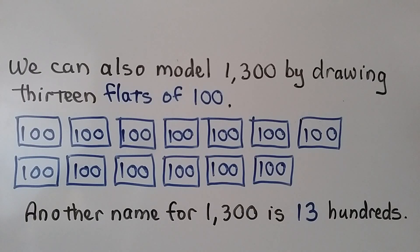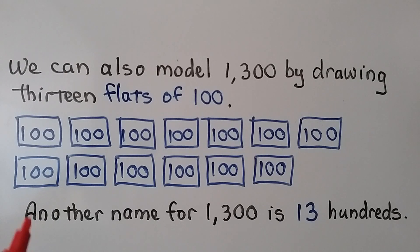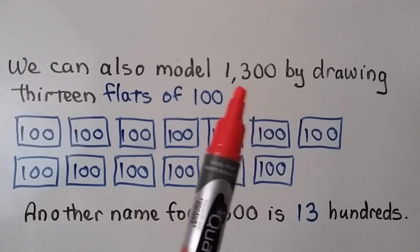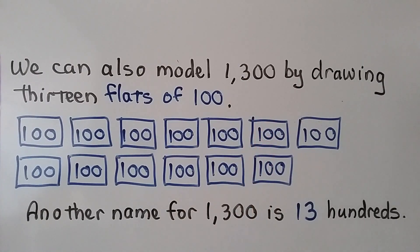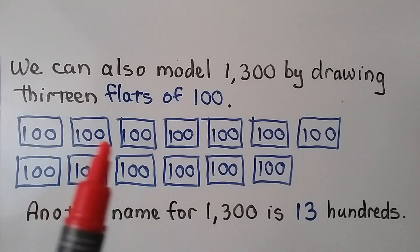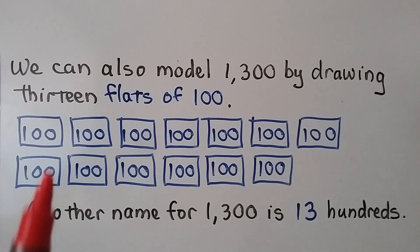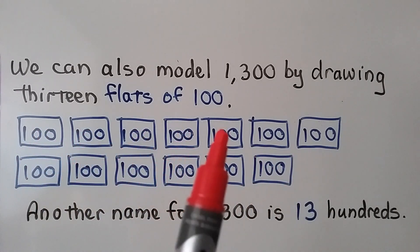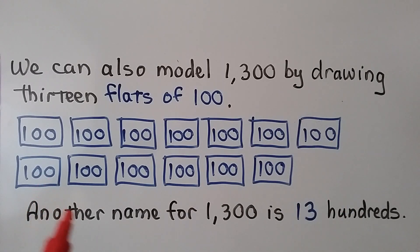We can also model 1,300 by drawing 13 flats of 100. So instead of using 1 large cube for 1,000 and 3 flats of 100, we can use 13 flats of 100. We count them: 1 through 13. So another name for 1,300 is 13 hundreds.